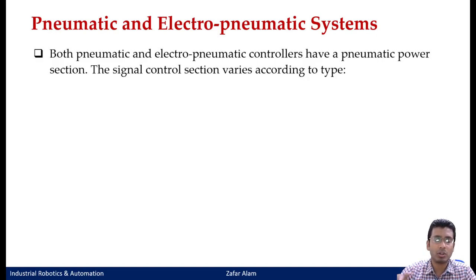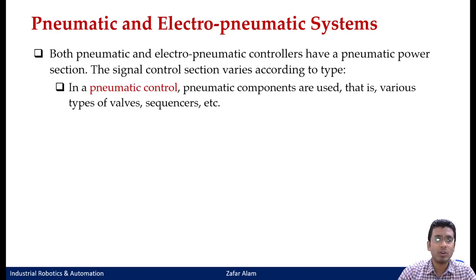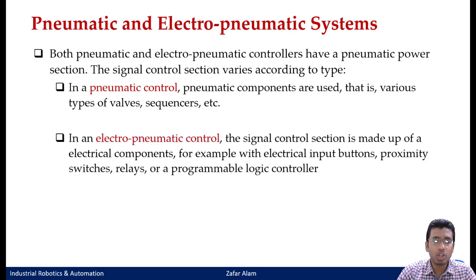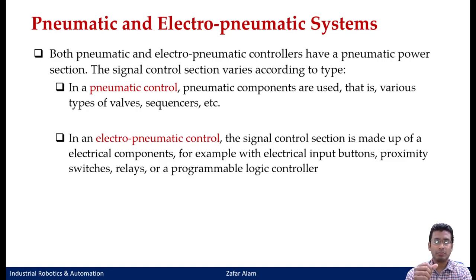Now let us see where pneumatic and electro-pneumatic systems differ in the signal control section. Both pneumatic and electro-pneumatic controllers have a pneumatic power section — both will involve cylinders and actuators, be it rotary or linear actuators, powered by compressed gas in pneumatic or pressurized oil in hydraulic systems. However, the signal control section will vary depending upon whether it is a pneumatic or electro-pneumatic circuit.